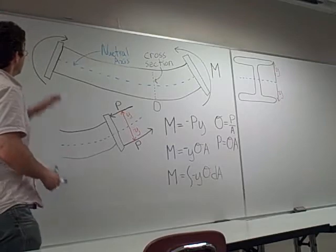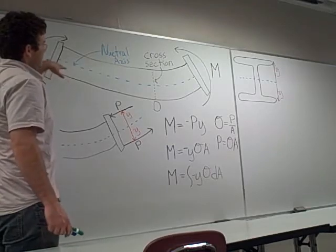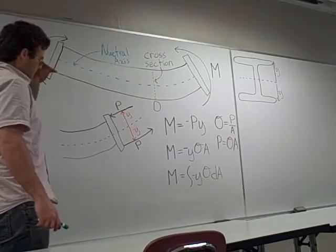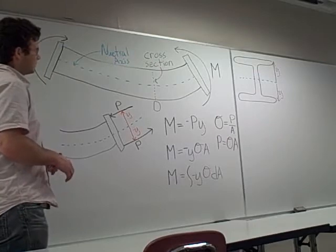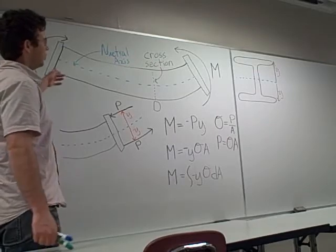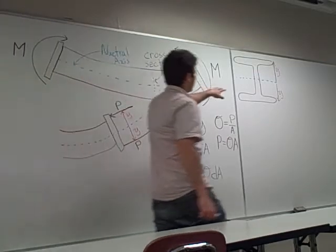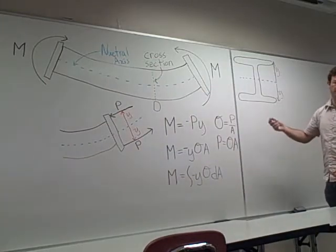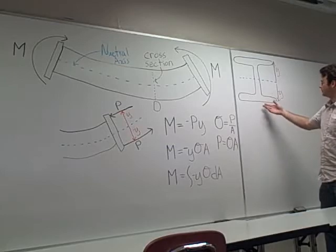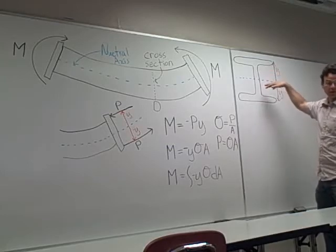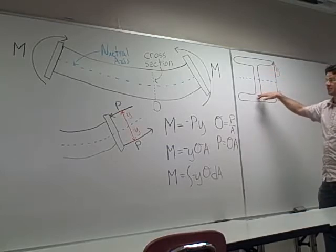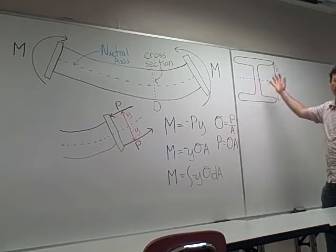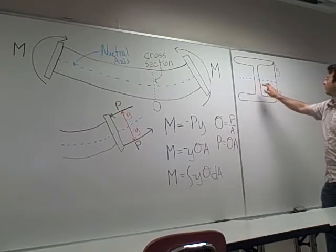Alright, so what I've drawn here is the side view of this I-beam. So yesterday we used a square for the cross-section. I just want to show that the cross-section is not necessarily a square. It could be any shape.